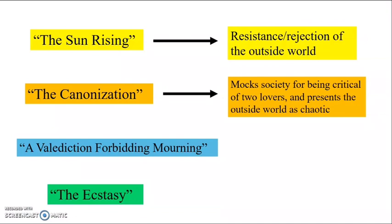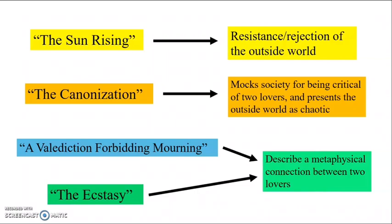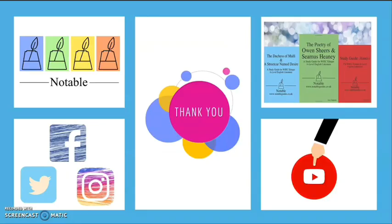The poems 'A Valediction Forbidding Mourning' and 'The Ecstasy' both present a similar metaphysical connection between two lovers — a connection which transcends the flesh and physical boundaries. If you're writing an essay on the motif of the microcosm or Donne's rejection of the outside world, I'd recommend deepening your discussion by referring to his marriage to Anne and the disapproval they faced from her relations. It may well have been this context which inspired Donne to imagine a world where one can truly distance themselves from society and form a little exclusive microcosm with the people they love. Referring to that biographical detail will always help enrich your discussion.